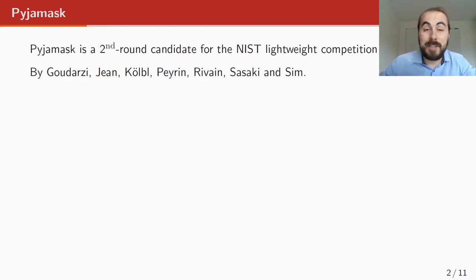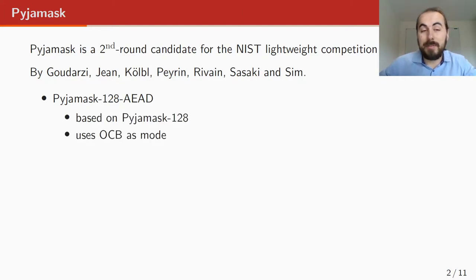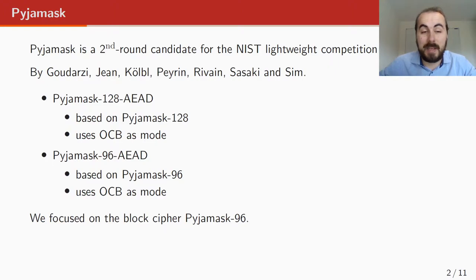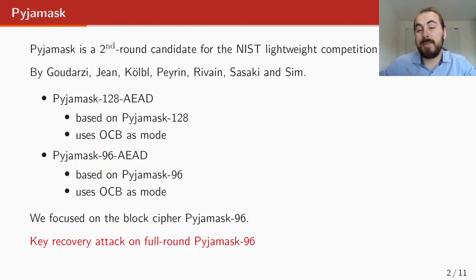PYJAMASK consists of two schemes. The first one is PYJAMASK-128-AEAD. It's an authenticated encryption scheme based on the block cipher PYJAMASK-128. It uses the OCB mode as a mode of operations. The other in the family is PYJAMASK-96-AEAD. It is based on the block cipher PYJAMASK-96 and it also uses the offset codebook mode. In our research, we focused on PYJAMASK-96, the block cipher. And what we managed to do was to design a key recovery attack on the full round PYJAMASK-96.